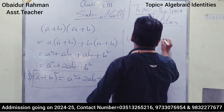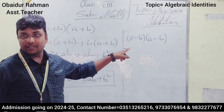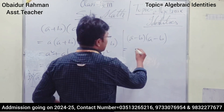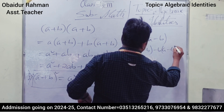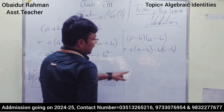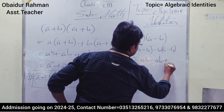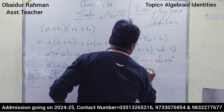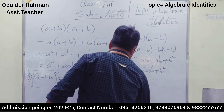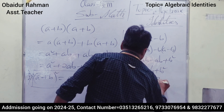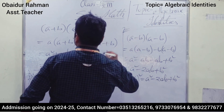What will (a − b) into (a − b) give? Look: (a − b)(a − b) means a into (a − b) minus b into (a − b), which equals a² − ab − ab + b². So we can write (a − b)² = a² − 2ab + b². This is identity number two.